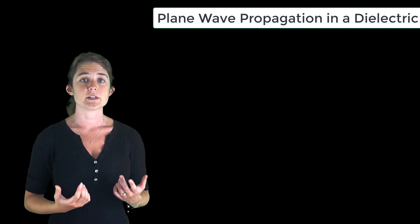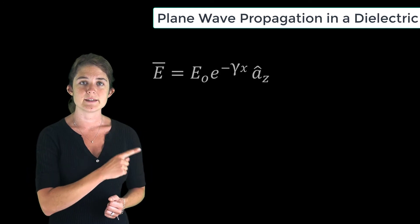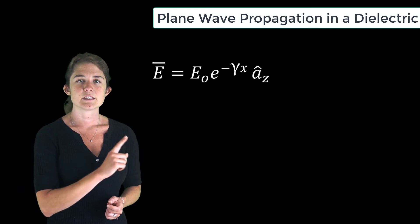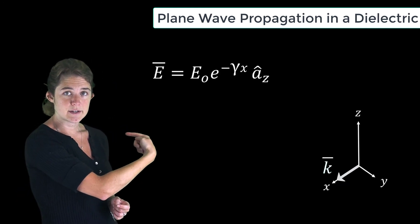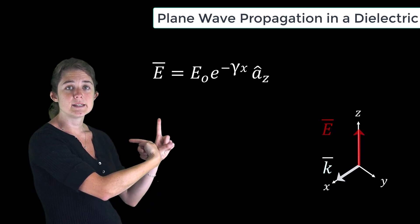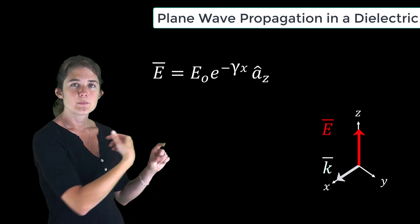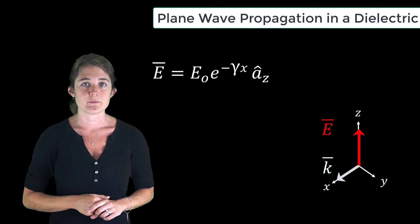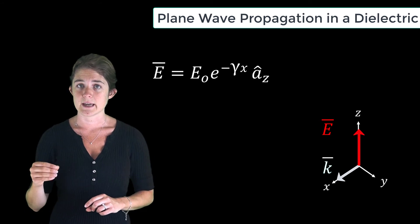Let's reconsider the equation for a simple plane wave described by this electric field. This is propagating in the plus x direction and pointing in the plus z direction. Previously, the exponential form would have been e to the negative j k x.